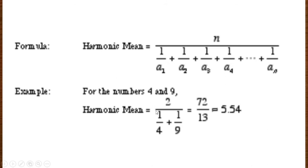So we have written here 2 divided by this first number is 1 by 4, you will write. Then second number 1 by 9, you will write. When you calculate this, you will get 72 by 13 is equal to 5.54.